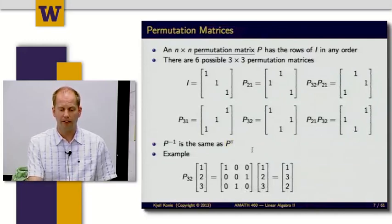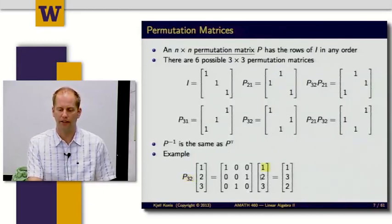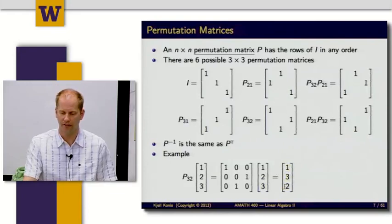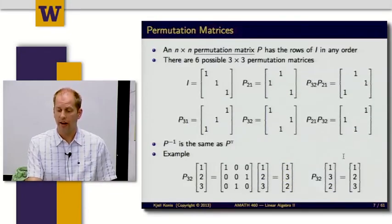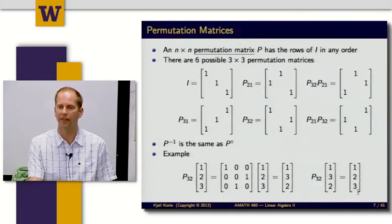As an example of what a permutation matrix does, P_{3,2} just swaps the second and third rows. If I have a column vector with entries 1, 2, 3, multiplying by P_{3,2} gives 1, 3, 2 — it takes whatever was in the third position and puts it in the second, and vice versa. If I multiply by the same permutation matrix again, it swaps back and restores the original order: 1, 2, 3.